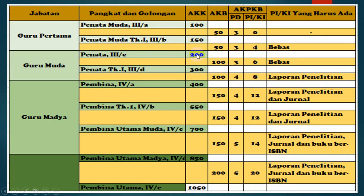Untuk jenjang 3C, AKK yang dibutuhkan adalah 200. Dari 150 menjadi 200 dibutuhkan 50 AK. Dari 50 AK ini harus dipenuhi 3 PD dan 4 PIKI. Angka kredit 4 PIKI ini bebas, artinya tidak harus penelitian, tidak harus jurnal, tidak harus buku.